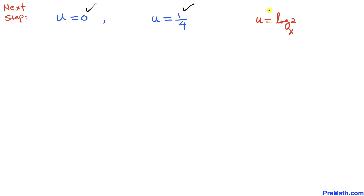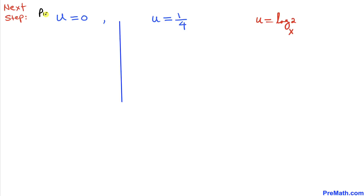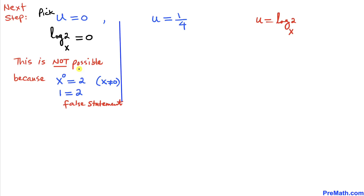We know u equals log of 2 with base x. Testing u equals 0: log of 2 with base x equals 0 is not possible, so we reject u equals 0.